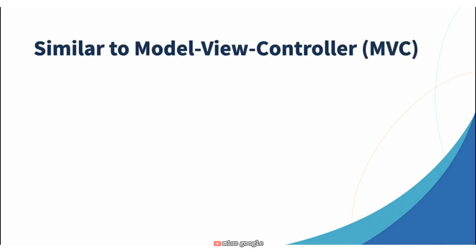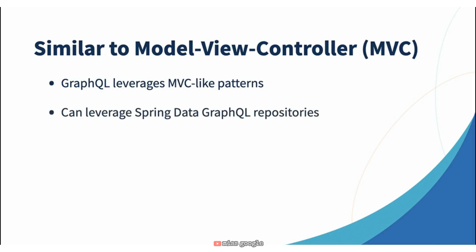When I look at the way they've implemented GraphQL Java in Spring, the first thing that comes to mind is that this is very MVC-like. GraphQL leverages these MVC-like patterns of controllers to handle the exposing of queries and mutations. In addition, you can leverage Spring Data GraphQL repositories as opposed to standard repositories if you want to simply expose CRUD operations. The Spring Boot starter is going to wire the common defaults so you don't have to, and throughout this course we're actually not going to manipulate those defaults except for the printing of the schema.